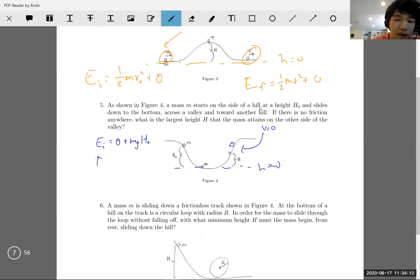So Ef equals zero plus m g h. Then we set these equal: Ei equals Ef. We get that h equals h naught. That's our statement of energy conservation.